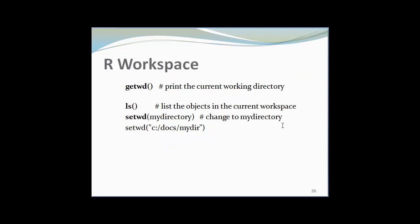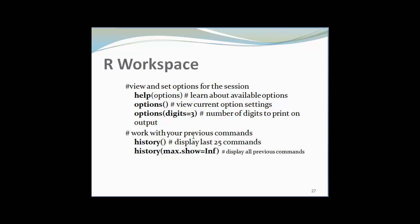Here are some functions. To print the current working directory, use the command getwd and open bracket. For getting the list of the objects in the current workspace, use ls function. To change to my directory, use setwd and in the bracket write your directory path. For example, C colon slash docs slash my directory. For learning about the available options on R, type the function help and the option name in the bracket. For viewing the current option settings, type options bracket. For the number of digits to print on the output, type the function options digit equal to 3. In place of 3, you can type any number you want to print on the output.